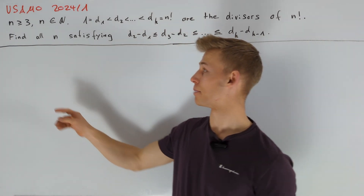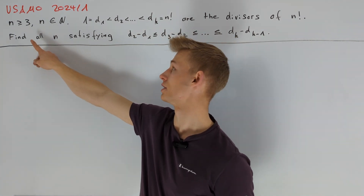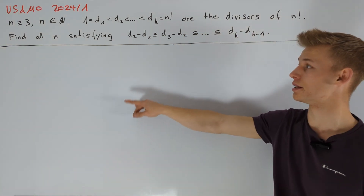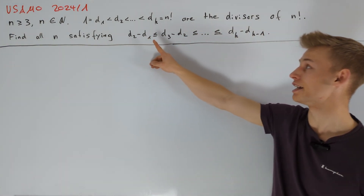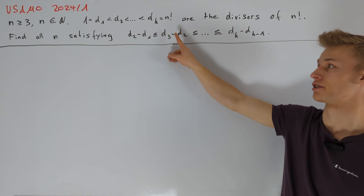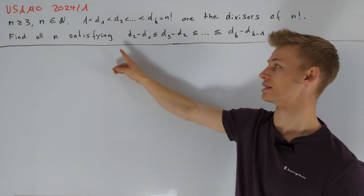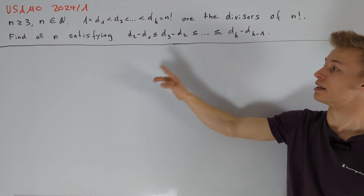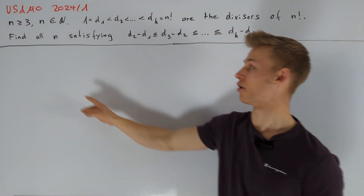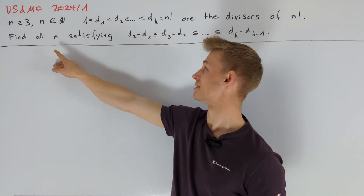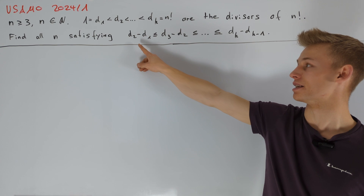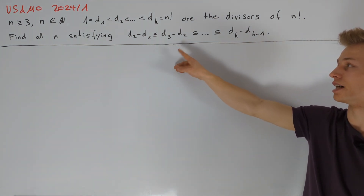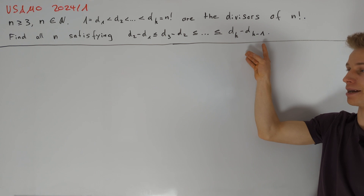We are given a positive integer n greater than or equal to 3. We consider the divisors d1 up to dk of n factorial, ordered so that d1 < d2 < ... < dk. We are asked to find all n such that d2 − d1 ≤ d3 − d2 ≤ ... ≤ dk − dk−1.